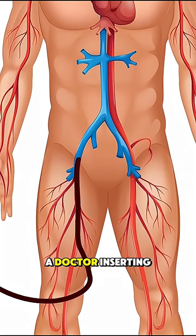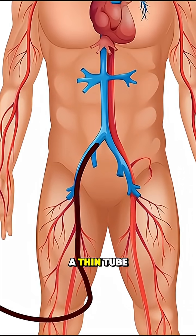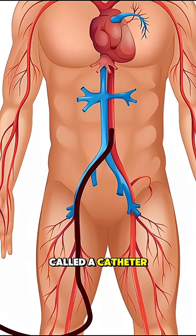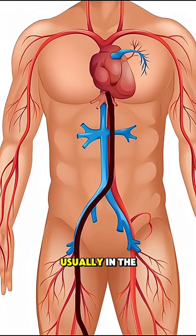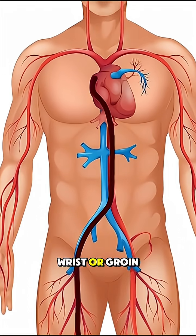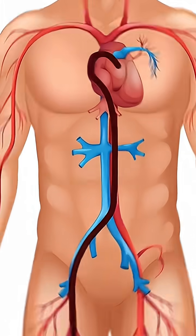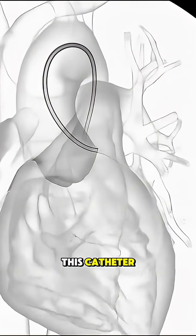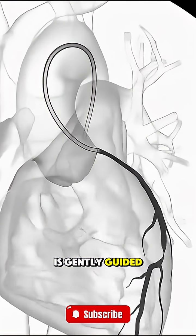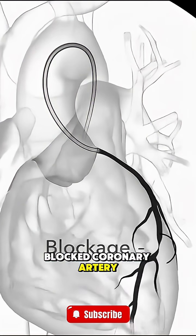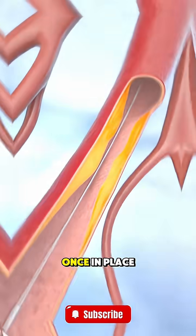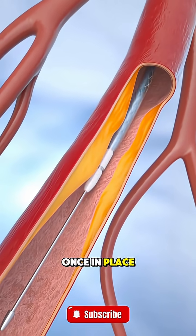It starts with a doctor inserting a thin tube called a catheter into an artery, usually in the wrist or groin. This catheter is gently guided through the blood vessels to reach the blocked coronary artery.